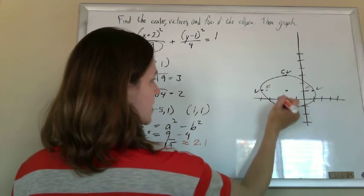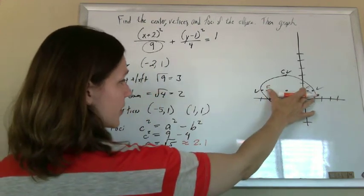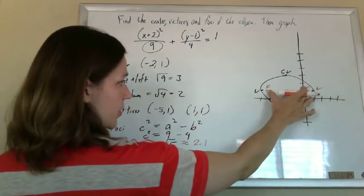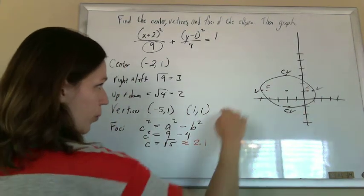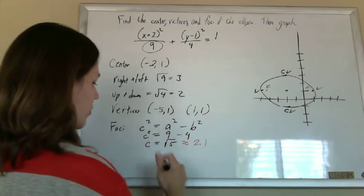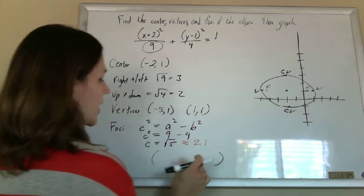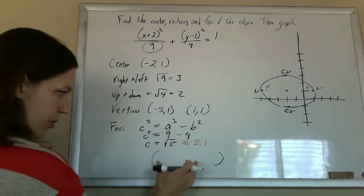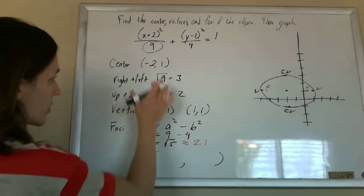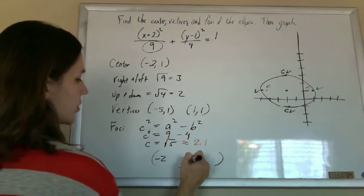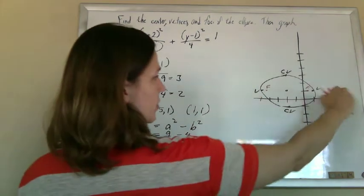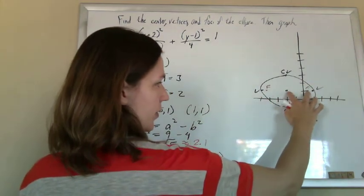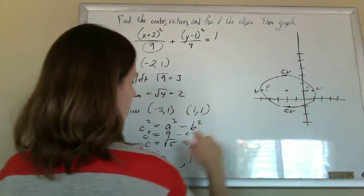And 2 over there, there's a focus there. Now they didn't ask us to graph the foci, so you don't really need to put those there, but you can tell, now that you've done it, where they are. So when you give it the ordered pair, what I like to do when I write the ordered pair for the vertices is I start with the center, negative 2, 1.